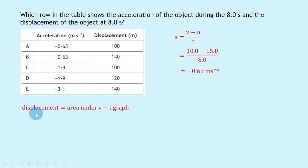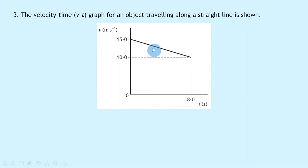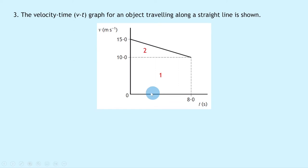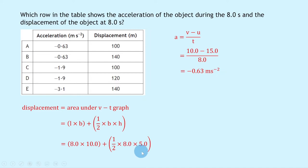To find displacement, remember it equals the area under the velocity-time graph. We have a rectangle and a triangle. Area = (length × breadth) + (½ × base × height) = (8.0 × 10.0) + (½ × 8.0 × 5.0) = 80 + 20 = 100 metres. So acceleration is minus 0.63 m/s² and displacement is 100 metres, which gives answer A.